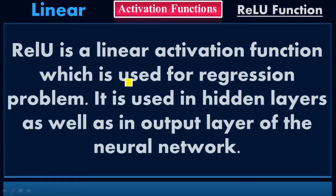We have two types of problems: regression problems and classification problems. In classification problems, we may have multiple classifications. But for regression, we have only two values — either 0 or 1, either positive 1 or negative 1. This is the difference between regression and classification problems. ReLU activation function is used for regression problems, and it is used in the hidden layer as well as in the output layer of the neural network.